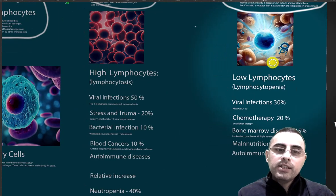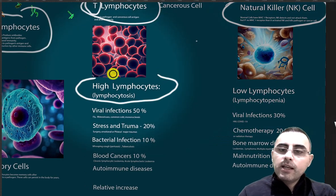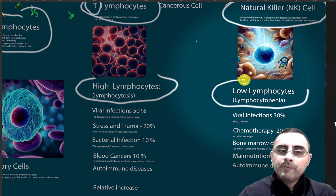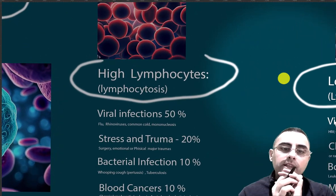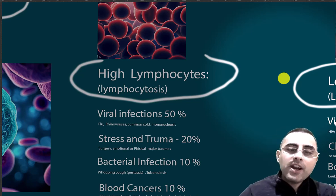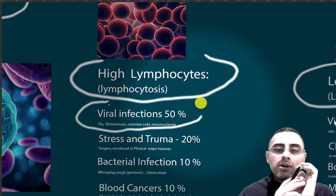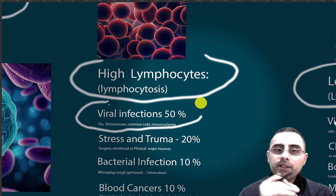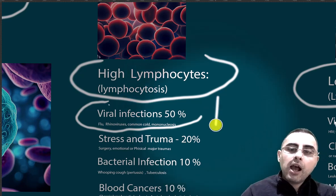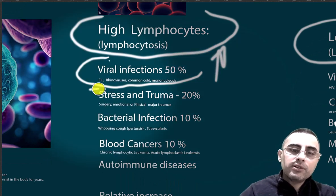Now let's discuss high and low lymphocyte counts in the blood. When a patient has a high lymphocyte count, we first think of viral infections — flu, common cold, mononucleosis, and other viral infections can cause high lymphocytes. Stress and trauma are also important, and even psychological trauma can cause increased lymphocyte levels.